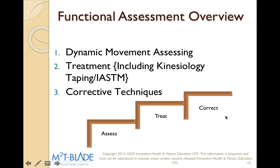By doing our assessment, we do what's called a Functional Assessment Review. Before any instrument-assisted soft tissue mobilization, we start with dynamic movement assessing — we want to see how somebody moves, where they're adhered, or where they may have no mobility. Once we identify the key areas of restriction, we go into our treatment, which includes kinesiology tape and IASTM. Then we go into our corrective techniques. We don't believe you can just assess or treat soft tissues without retraining the body how to move.